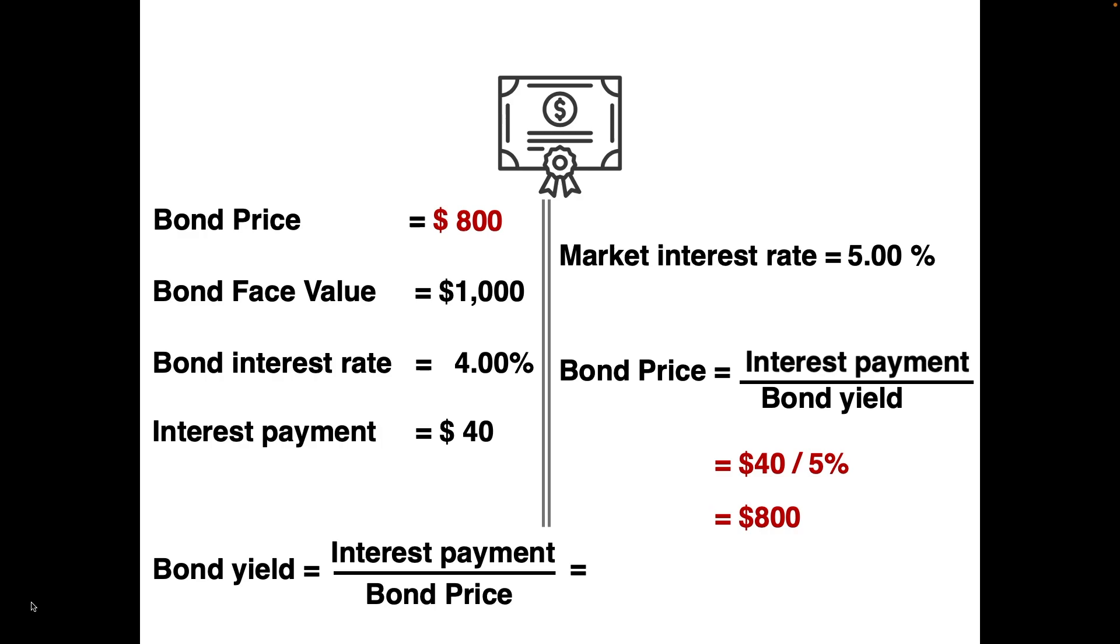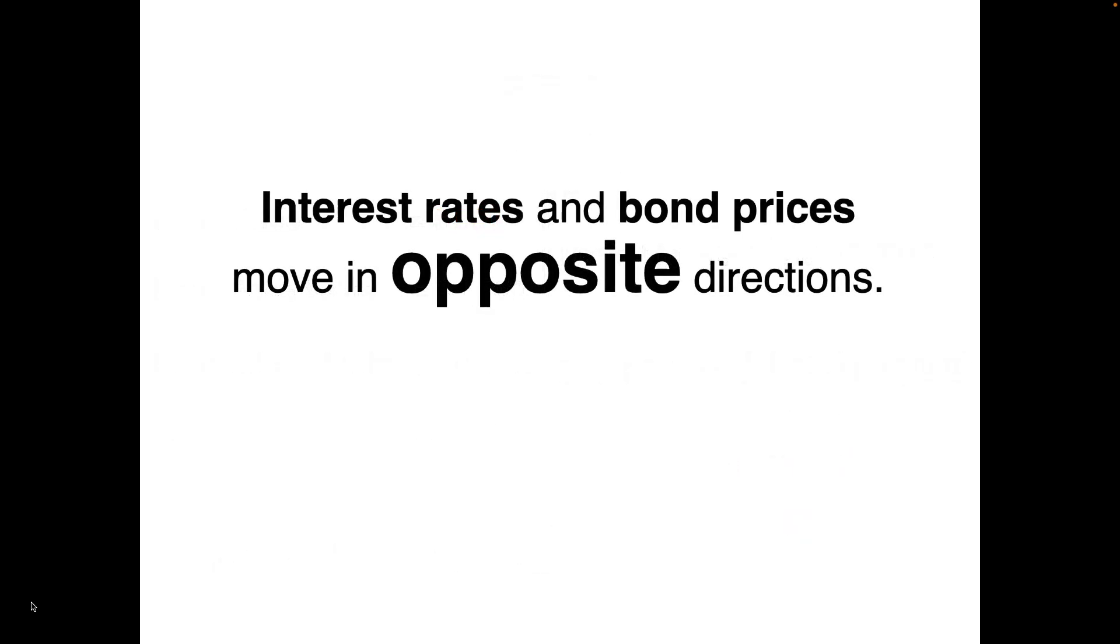This illustrates the relationship between market interest rate and bond price. If the market interest rate increases to 8%, the bond price must decrease according to the formula—in this case to $500. This is a very important relationship that the US government uses to decide money supply and impact the economy. What you must remember is that interest rates and bond prices move in opposite directions.